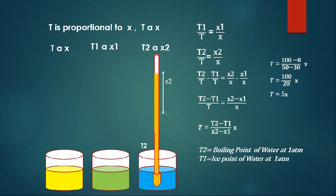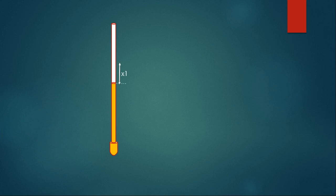Now I am going to explain how we can make a thermometer. This is a capillary tube filled with some amount of liquid. When I dip it in the ice point — the ice-water mixture — I get a thermal expansion up to X1. When I dip it in boiling water I get a thermal expansion up to X2.